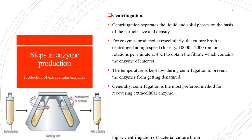Talking about the steps in enzyme production — production of extracellular enzymes by centrifugation. Centrifugation separates the liquid and solid phases on the basis of their particle size and density. For enzymes that are produced extracellularly, the culture broth is centrifuged at a very high speed to obtain the filtrate which contains the enzyme of interest. The temperature is kept low during centrifugation to prevent the enzymes from getting denatured. The microbial pellet obtained after centrifugation can be further disintegrated to obtain any intracellular enzyme of interest. Generally, centrifugation is the most preferred method for recovering extracellular enzymes.